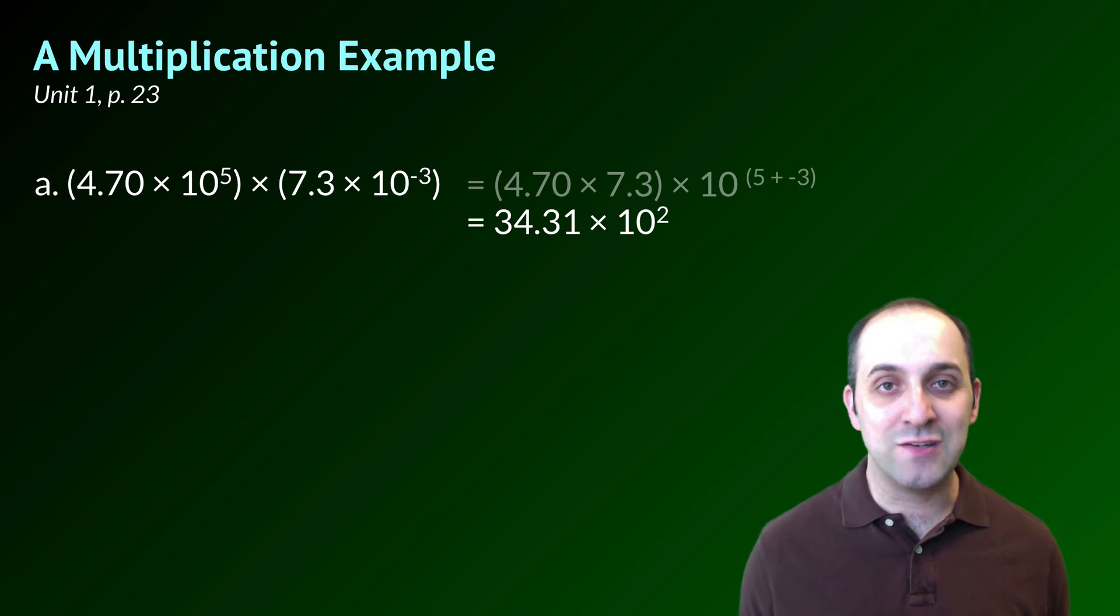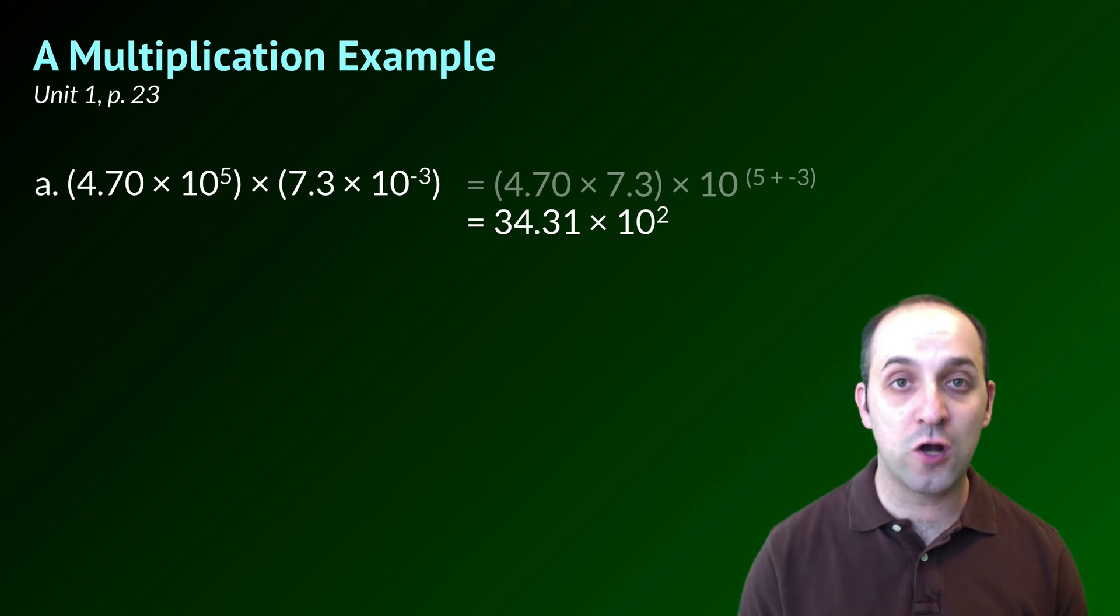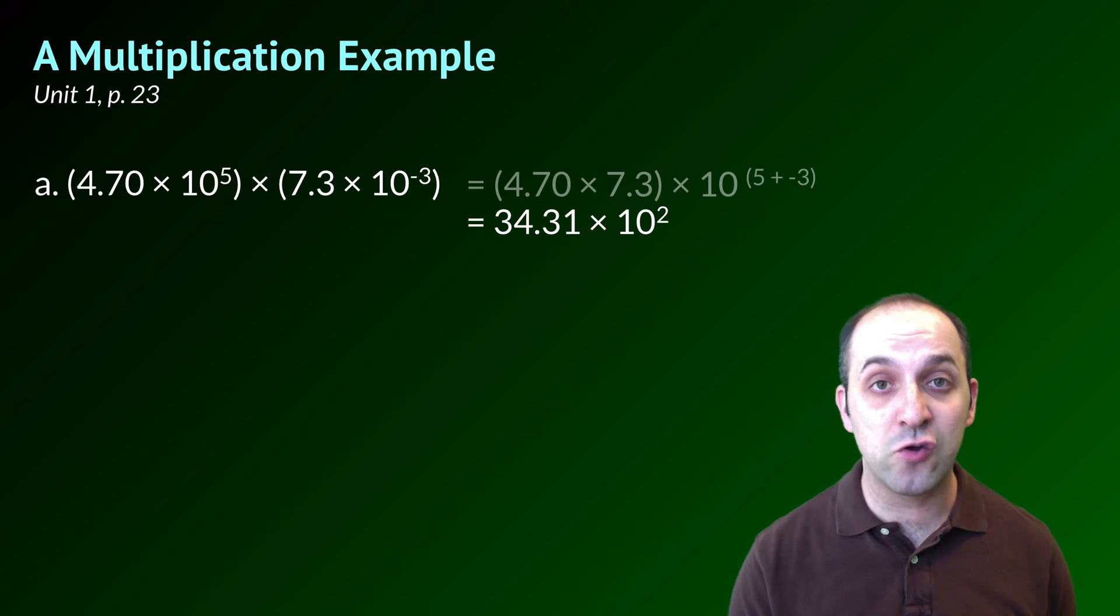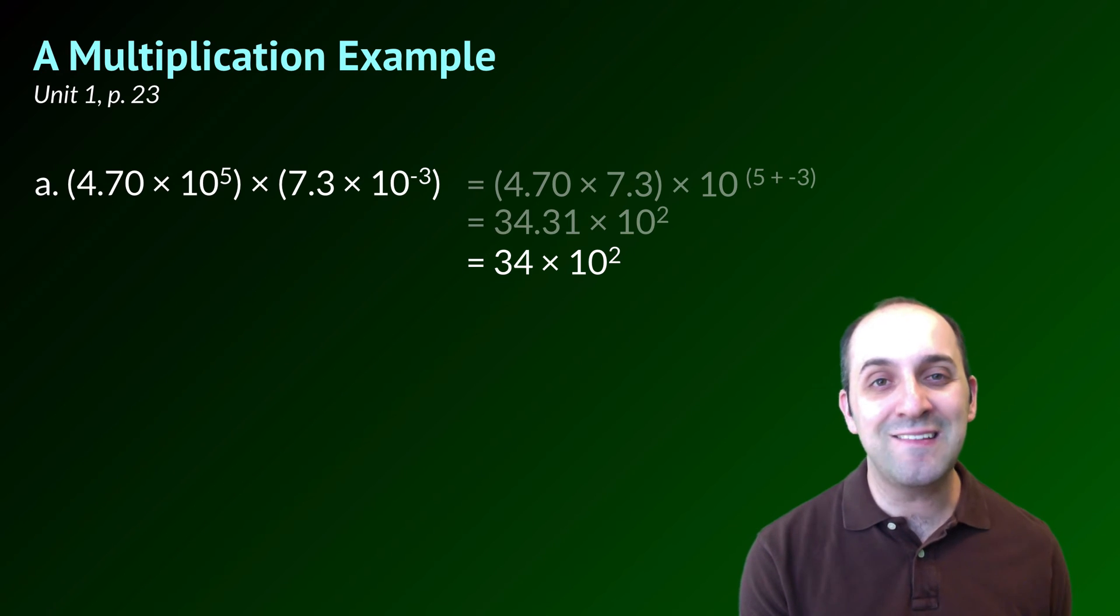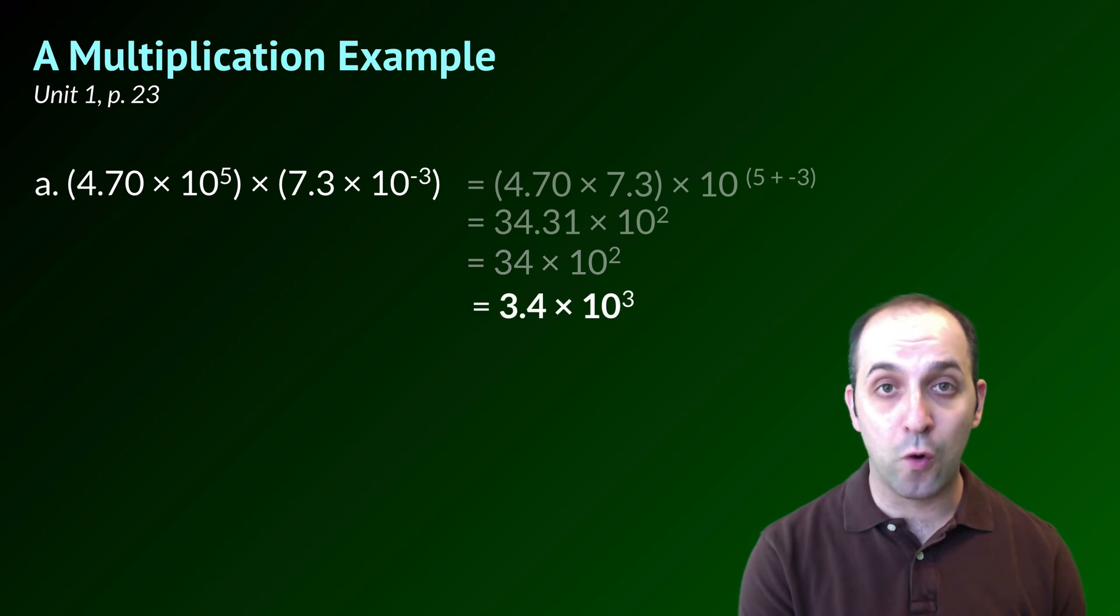But of course, we're not actually done here. We have to apply those rounding rules that we talked about in our prior video on rounding. When we multiply two numbers, our final answer can only have as many significant figures as there are in the fewest significant figures in our terms. 4.70 has three significant figures and 7.3 has two significant figures. So our answer can only have two significant figures. We have to modify our answer to be 34 times 10 to the second. But of course, this isn't actually in scientific notation. And so if we wanted to put it back into scientific notation, we would need to make 34 ten times smaller. And we would do this by making our exponent 10 times larger. So our best answer for this problem is going to be 3.4 times 10 to the third.